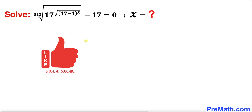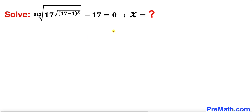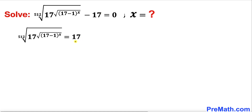Let's go ahead and get started with the solution. The first thing we are going to do is move this negative 17 to the right hand side. Now we are going to undo this radical with index 512, so we are going to take power 512 on the left hand side and likewise on the right hand side as well.